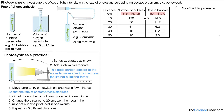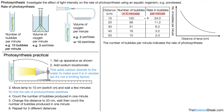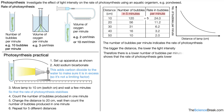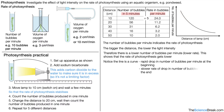Here is a graph of our potential results. Number of bubbles per minute is our dependent variable on the y-axis, and distance of the lamp is our independent variable on the x-axis. The curve shows that the bigger the distance, the lower the light intensity, and therefore a lower number of bubbles per minute — a lower rate of photosynthesis. Notice the line is a curve with a rapid drop at the beginning and a slower rate of drop at the end.